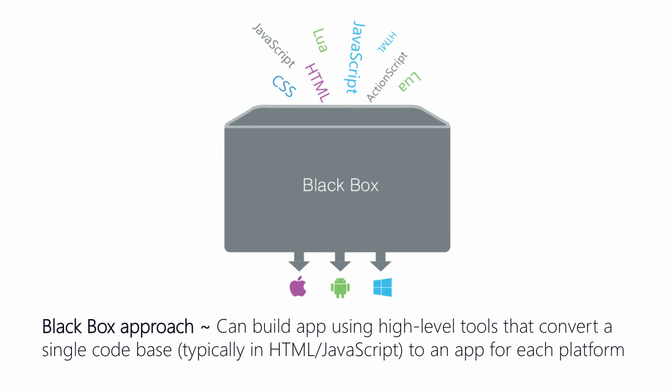The black box approach is where we have some sort of magic black box that takes a single code base and produces a native app for each one of the platforms. There are several vendors out there that do this, and it can be an appealing approach that solves the silo problems because now we can take one code base to generate all of our apps. Typically that code base is written in HTML and JavaScript, which means if you've got a web team, this can be a very appealing approach. The downside is that you're often going to be restricted to the features that are common across all of the platforms you want to target, meaning you can't get to some of the cooler or newer features introduced on a platform.